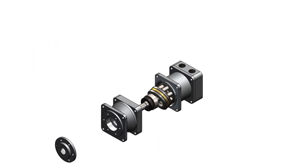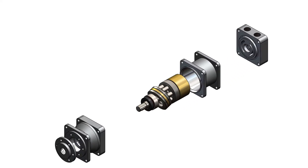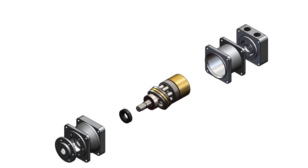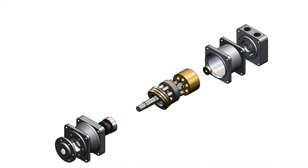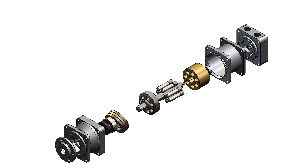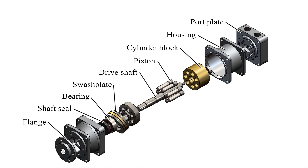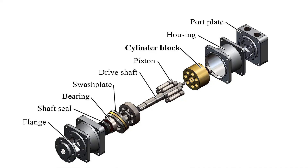Swashplate piston pump design: most swashplate piston pumps consist of a few basic components, including flange, shaft seal, bearing, swashplate, drive shaft, piston, cylinder block, housing, and port plate.